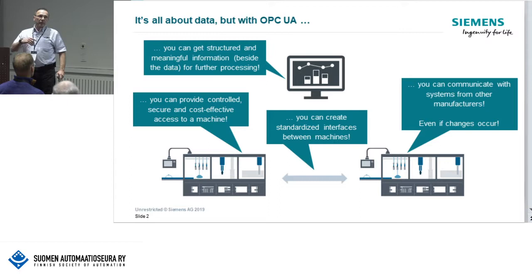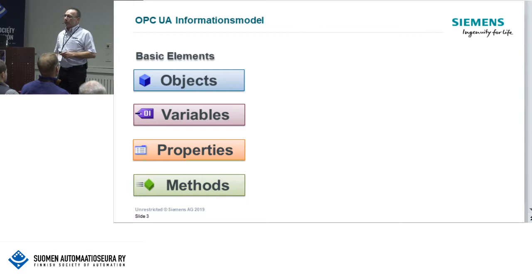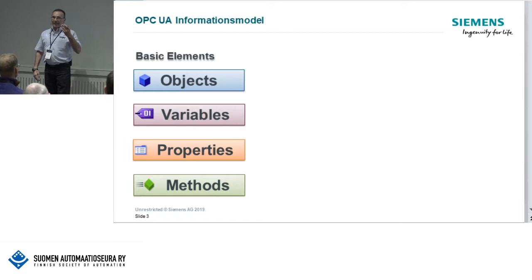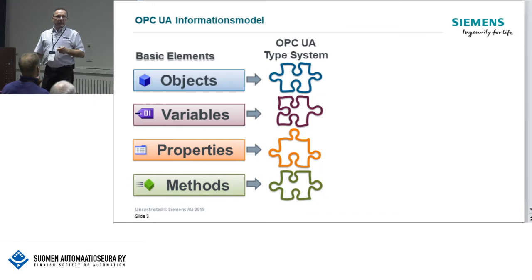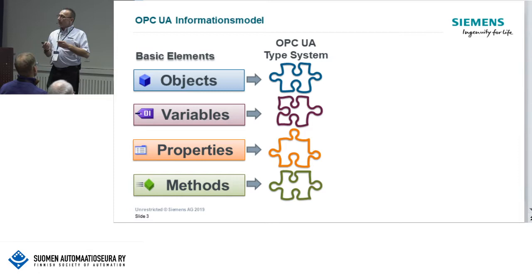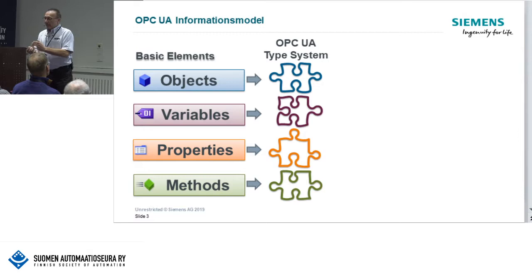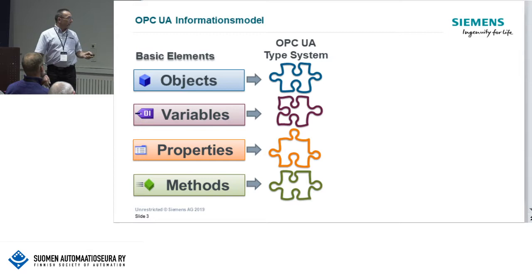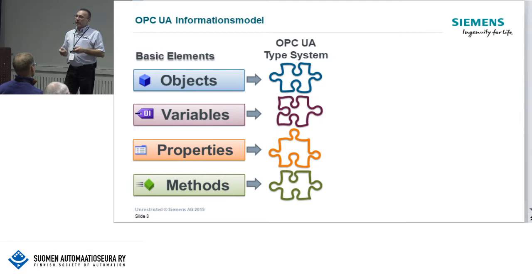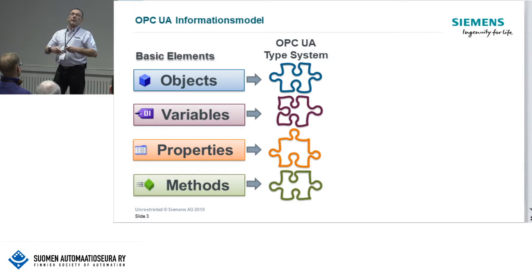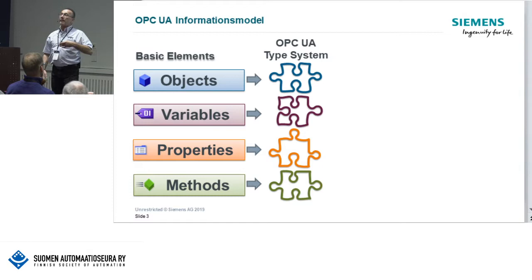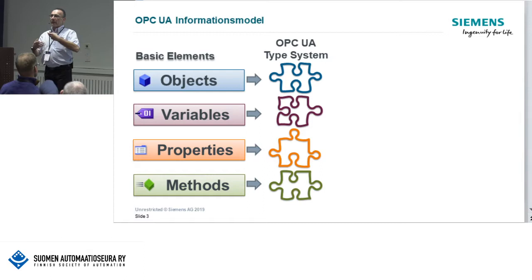I will give you an example of how you can do it with a Siemens S7-1500 PLC, covering the basic elements of OPC UA. There are existing object types, variable types, properties, methods, and so on — it's always clearly defined as an OPC UA type system. A companion specification defines, for example, a machine type for rubber machines, with variables, properties, and methods. Methods are very important in OPC UA because they reduce complicated handshakes between devices — the old PLC handshake sequence of request, acknowledge, send, and confirm is replaced by a straightforward method call.